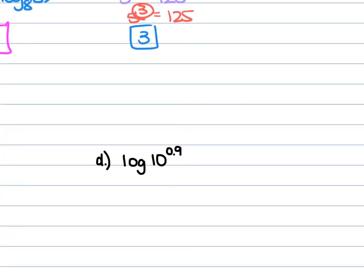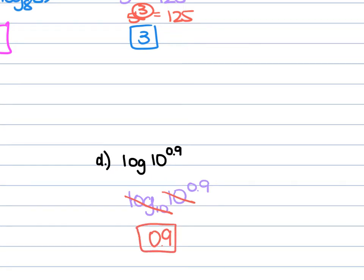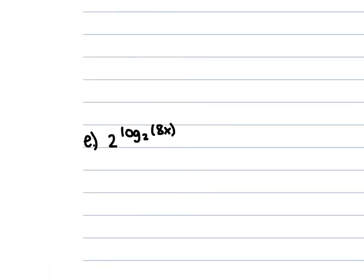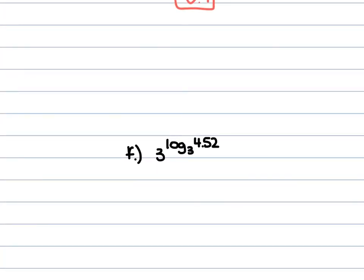For D, we have log of 10^0.9. Remember, this is the same as log₁₀ of 10^0.9. The log₁₀ of 10 cancels out, leaving just 0.9. For E, we have 2 to the power of log₂ of 8x. The 2 and the log₂ cancel out, leaving 8x. For F, we have 3 to the power of log₃ of 4.52. The 3 and log₃ cancel, giving 4.52 as our solution.